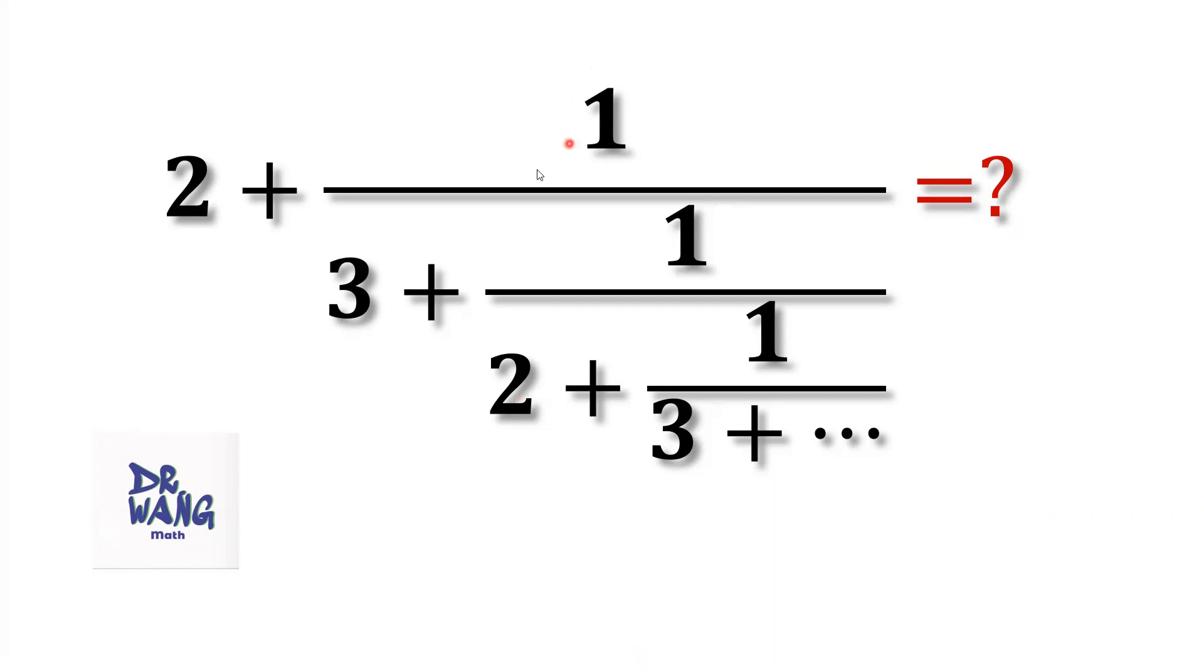2 plus 1 over 3 plus 1 over 2 plus 1 over 3 plus... Here, we can see the pattern: 2, 3, 2, 3, 2, 3, forever.